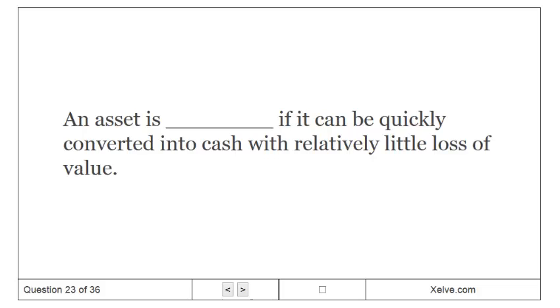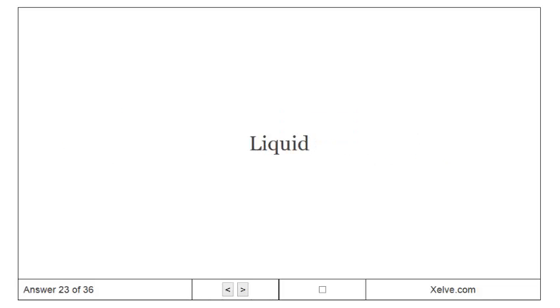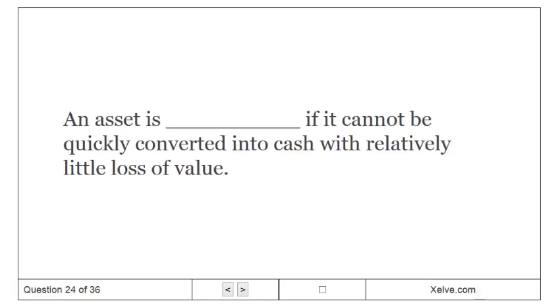An asset is liquid if it can be quickly converted into cash with relatively little loss of value. An asset is illiquid if it cannot be quickly converted into cash with relatively little loss of value.